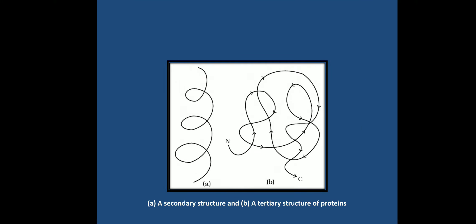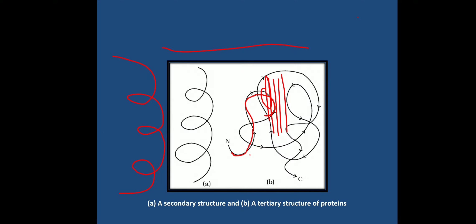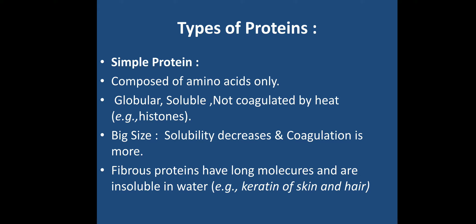The quaternary structure arises when multiple tertiary (globular) protein subunits come together to form a functional protein. For example, hemoglobin consists of four subunits, and histone proteins form an octamer of eight units. When multiple protein units assemble into a functional protein, it is called the quaternary structure.